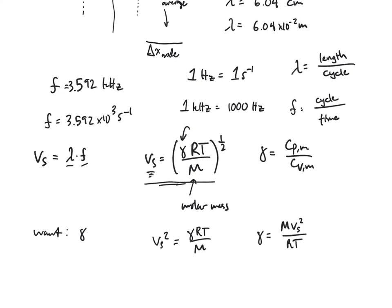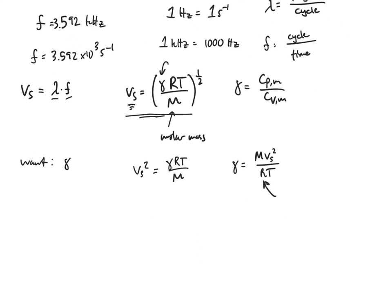One more note that I almost forgot. This R, you're going to want to use the value of R that's in joules per kelvin mole, and the kelvin is going to cancel out with the temperature. Quick side note: that temperature you measured in the lab, you'll need to have used the thermometer that was right there next to the oscilloscope in order to measure that temperature, and then you'll use that in kelvin.